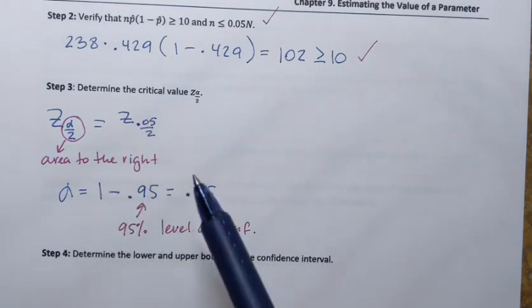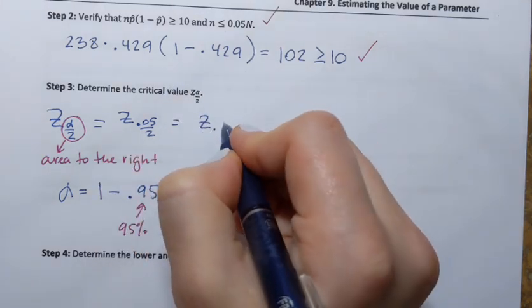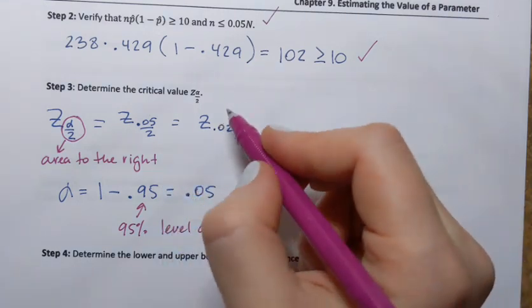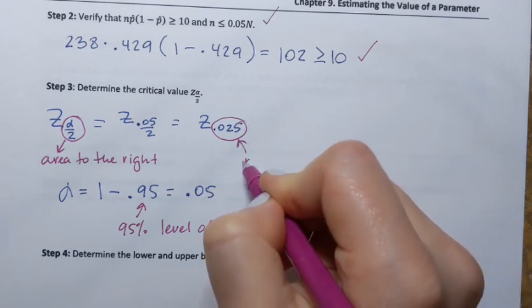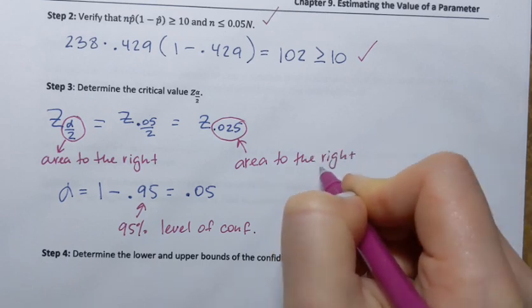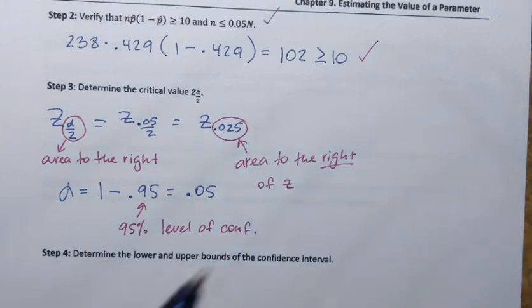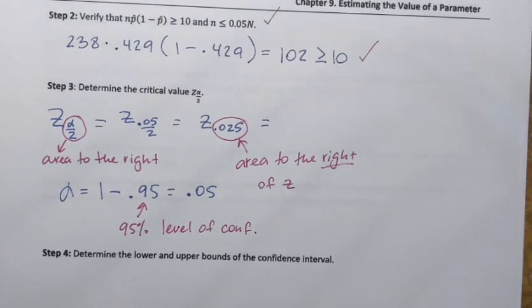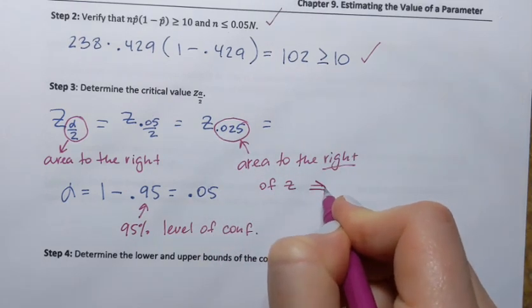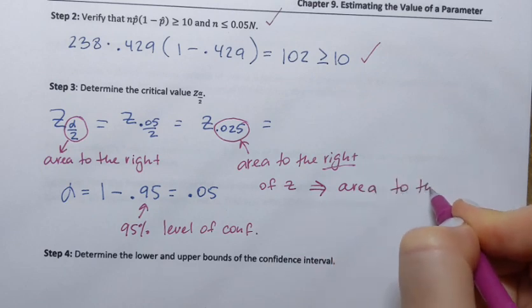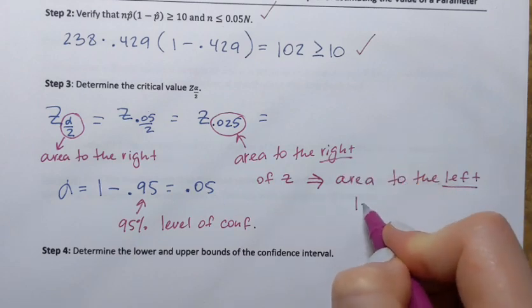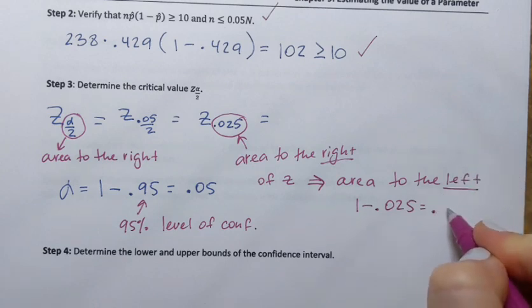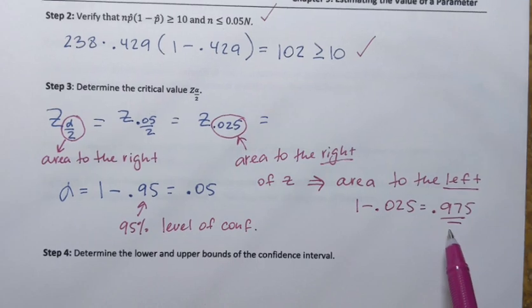Dividing 0.05 by 2 gives 0.025, so 0.025 is the area to the right of z. To find z itself I'll use the z-table, which shows areas to the left of z. Knowing that 0.025 is area to the right of z, I can find the area to the left by subtracting from one: 1 minus 0.025 equals 0.975. That is the value I'm going to look up in the table.